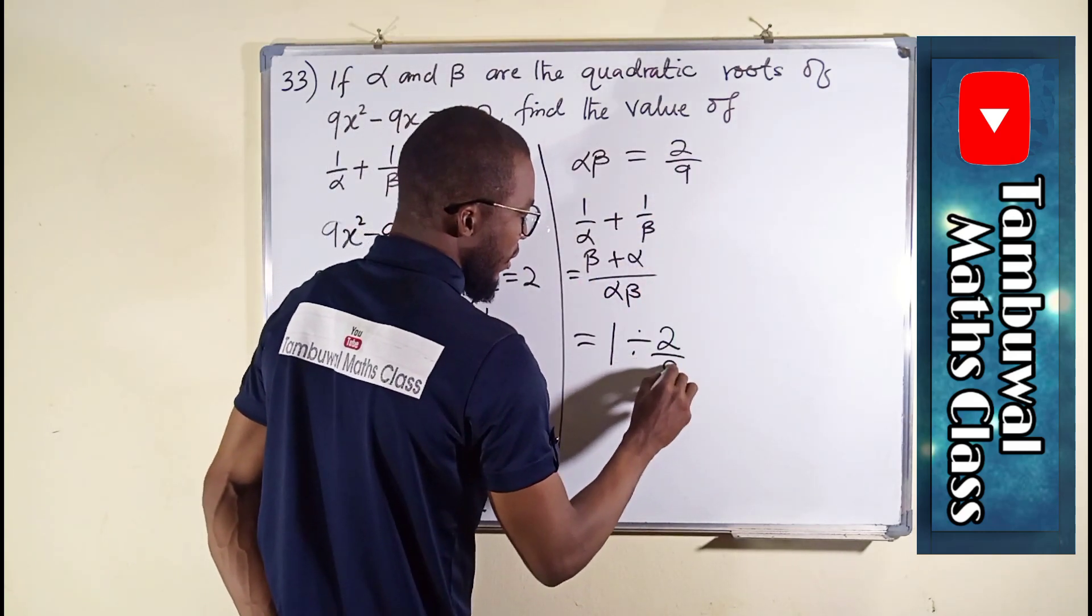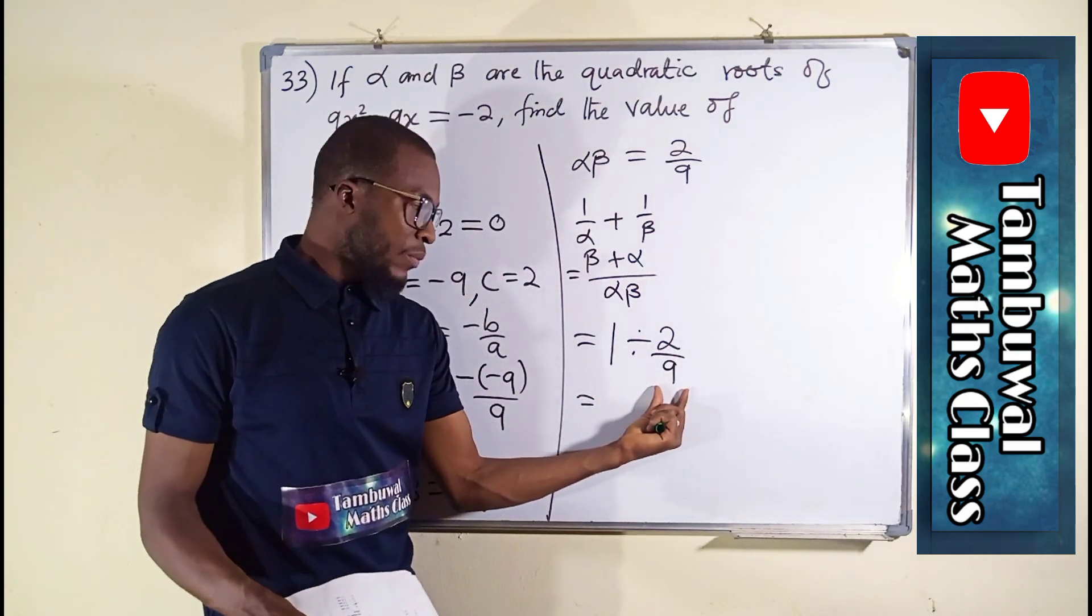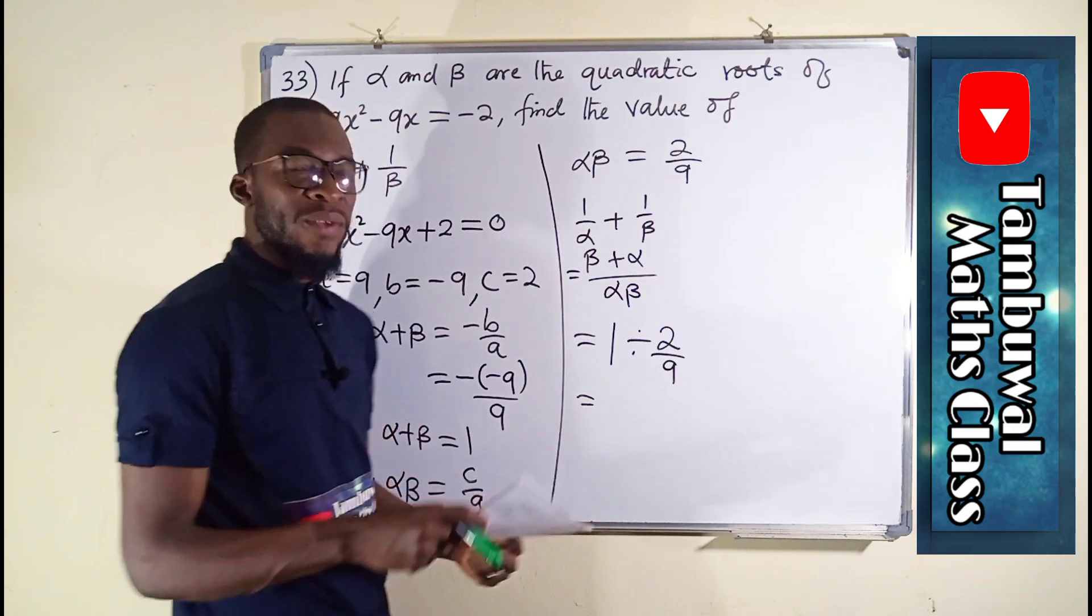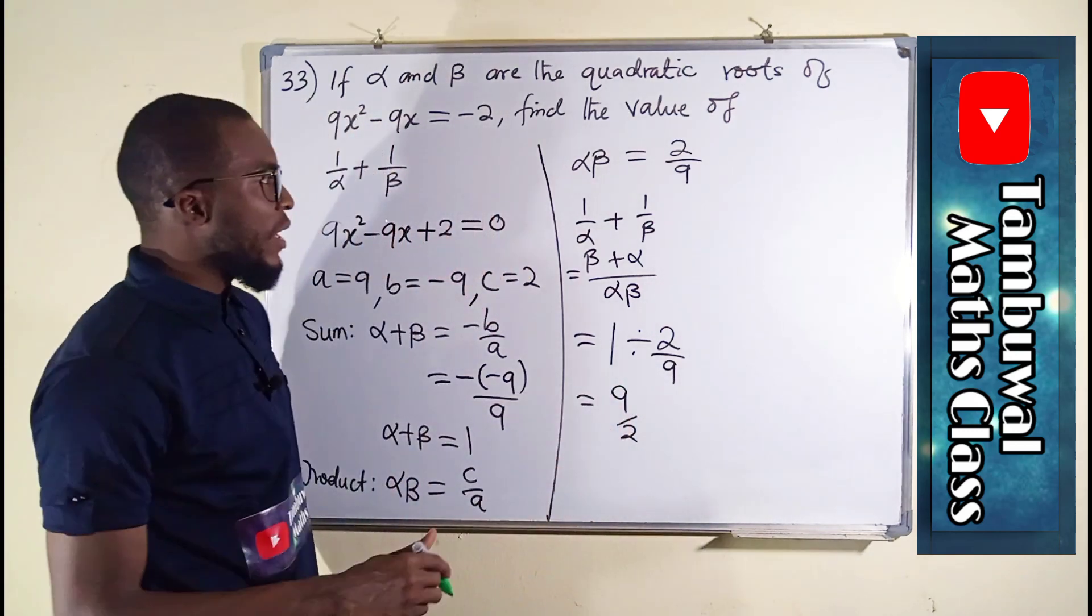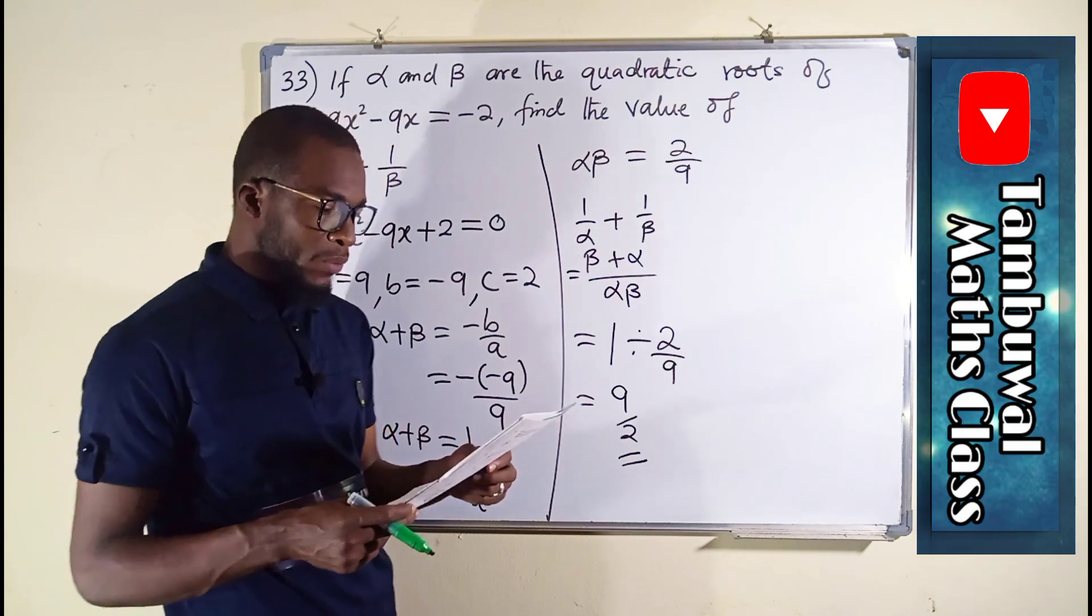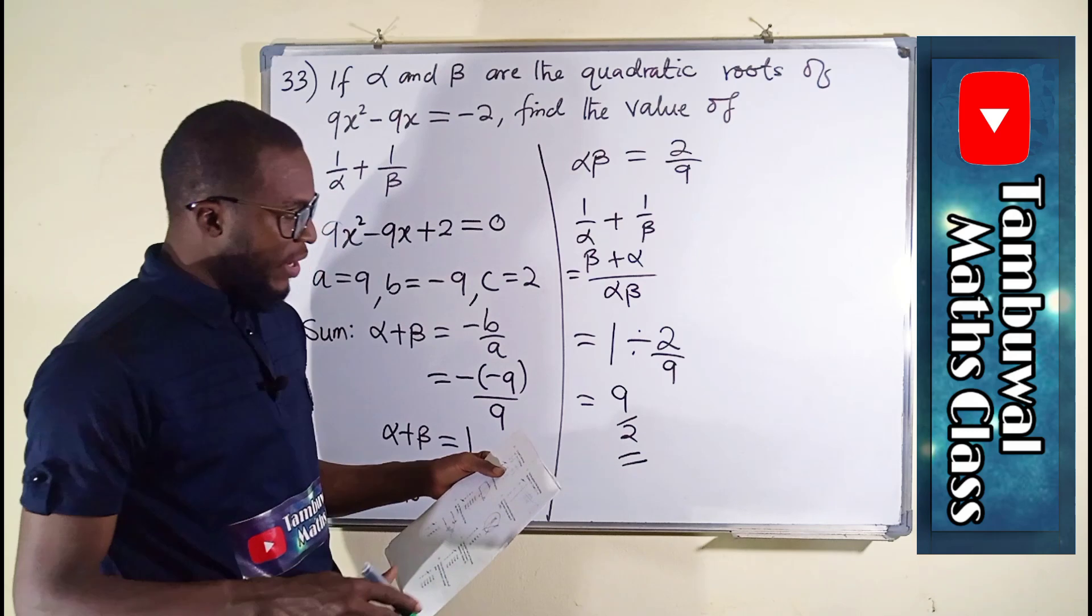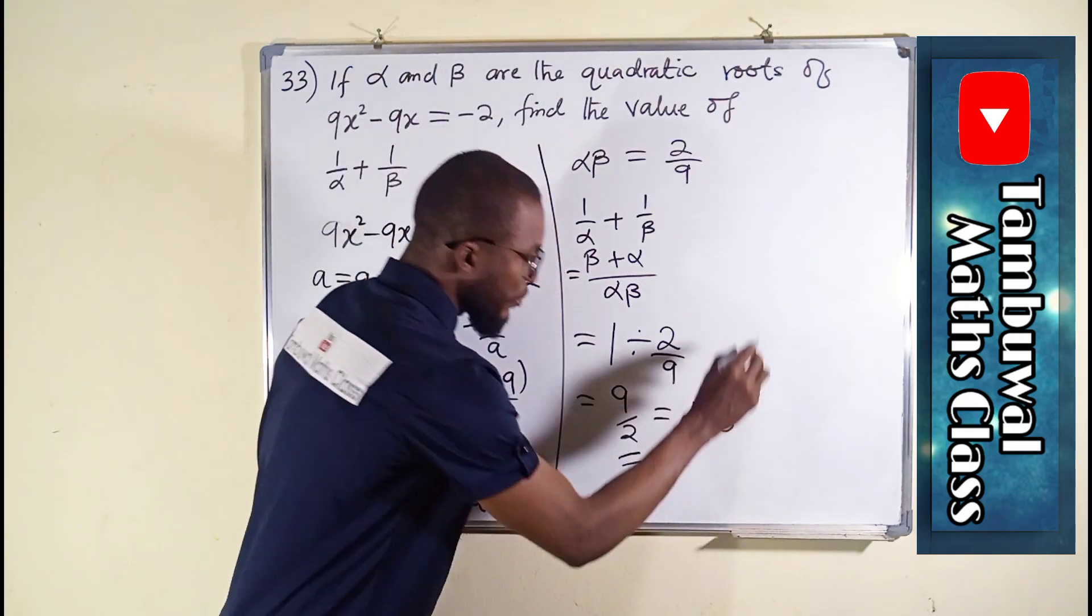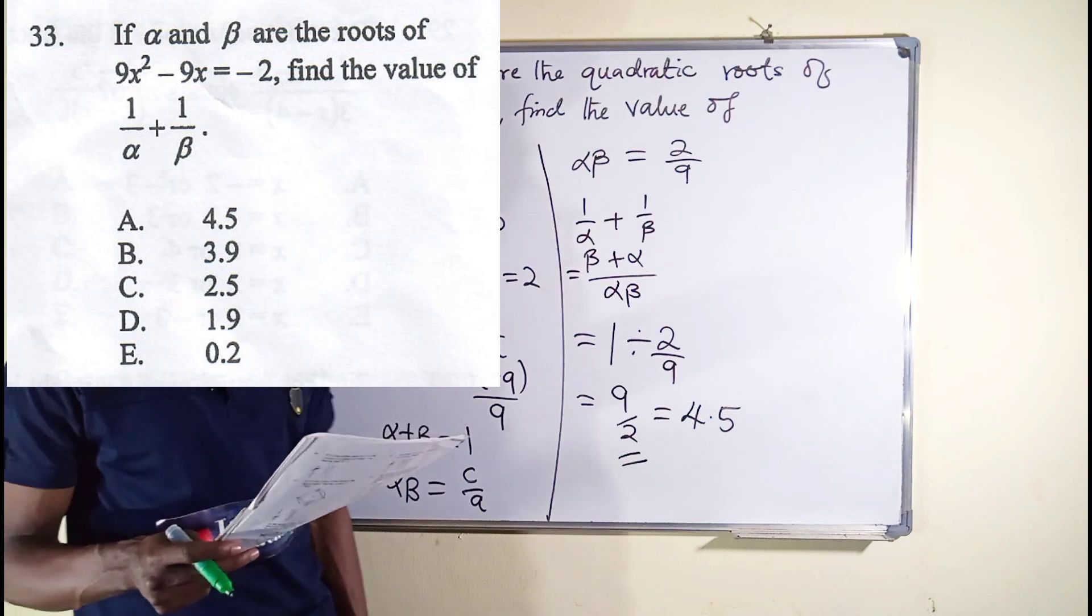This is equal to, this is a fraction and 1 is dividing our fraction. It's just like taking the reciprocal of that fraction by flipping it over as 9 over 2 instead of 2 over 9. And this is the required solution, 9 over 2, an improper fraction. All the solutions here are in decimal points, so let us see how we can change it. This one is the same thing as 4.5, which is option A here. So now let us look on to question number 34.